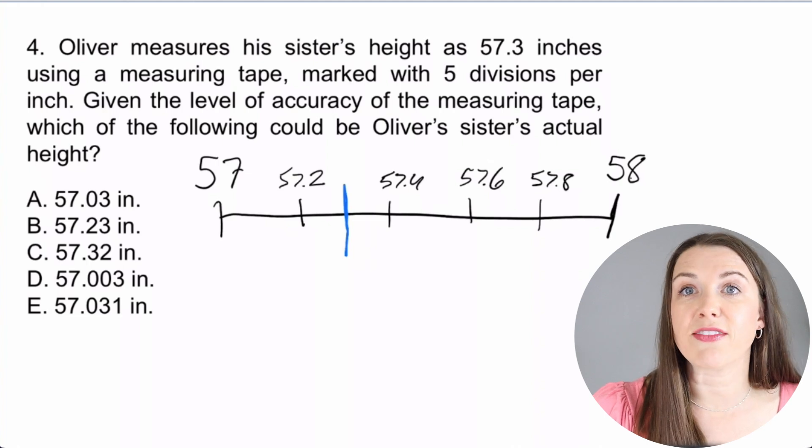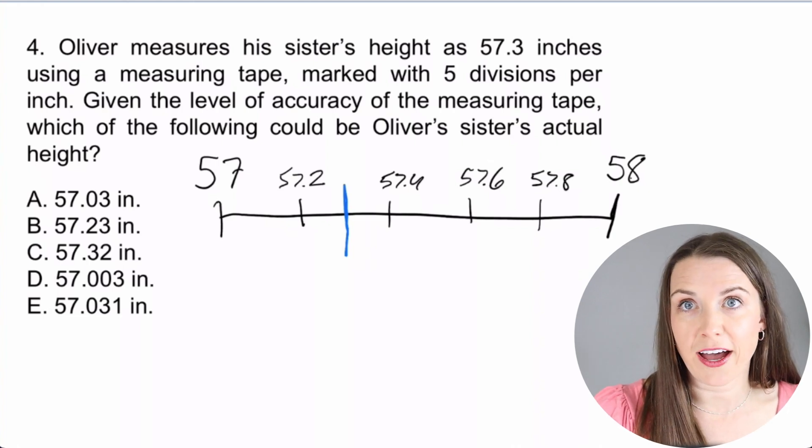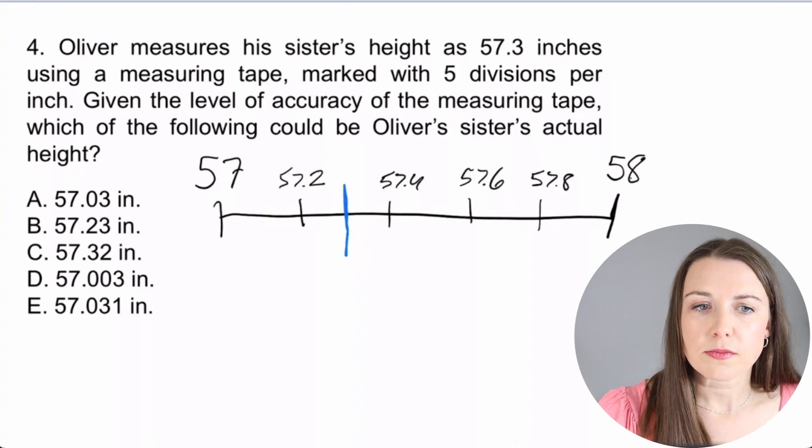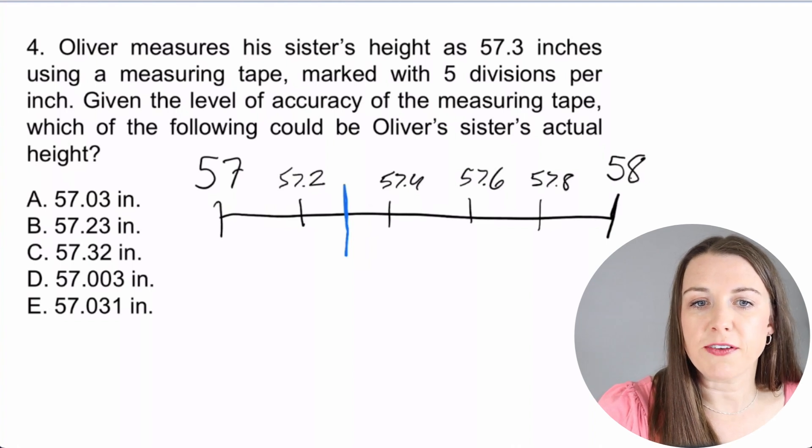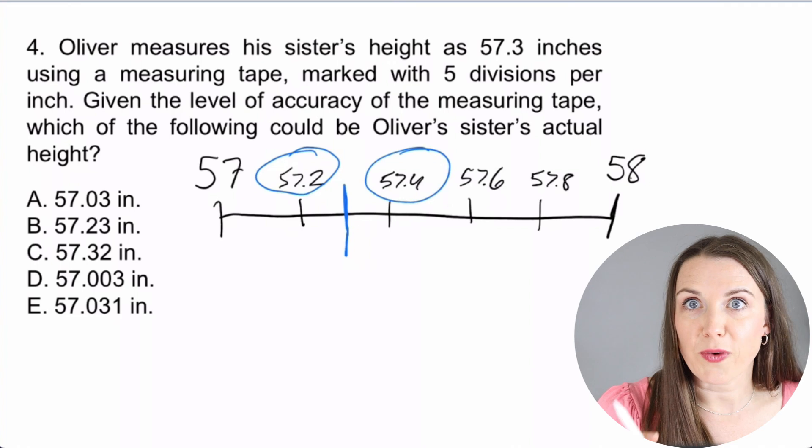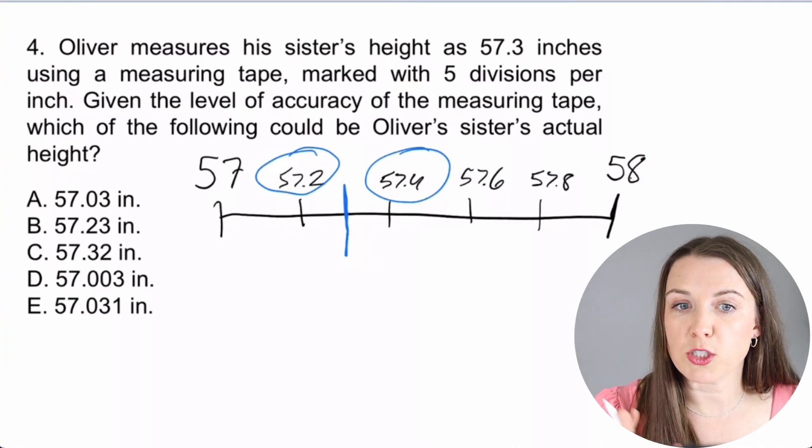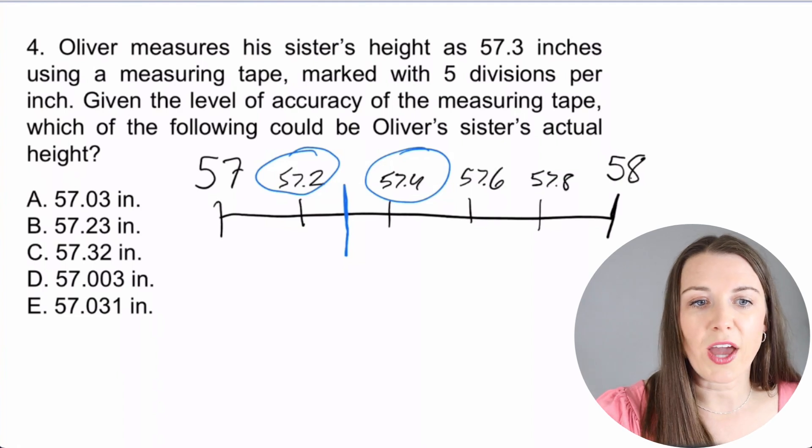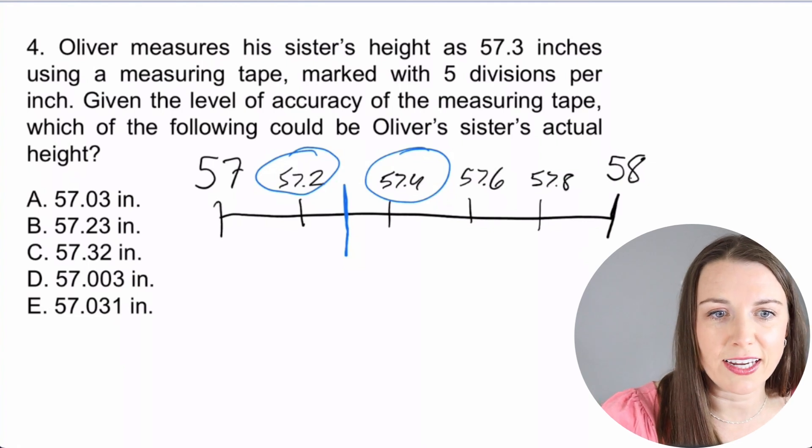And so that's what it's saying. Given the level of accuracy of the measuring tape, which of the following could be his sister's actual height? So he just kind of had to guess. So let's look here. We know that it's in between 57.2 and 57.4, right? So let's get rid of all of the answers that are not in between 57.2 and 57.4. So A, 57.03, that's a 57.0, so that's not it.